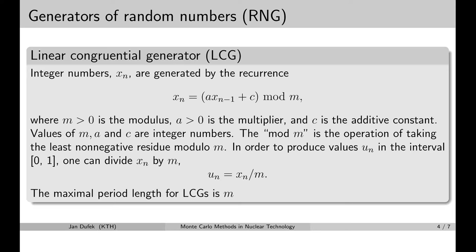LCGs are truly simple generators, given by a single equation. The random numbers are denoted by x, and the sequence is indexed by n. As you can see, each random number depends on the previous random number in the sequence. Therefore, in order to start the LCG you need a so-called seed — the very first random number, denoted x₀. So typically, when you run your Monte Carlo simulation powered by the LCG, you need to provide the seed to the random number generator.